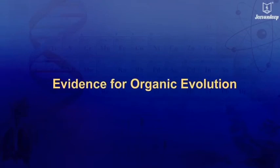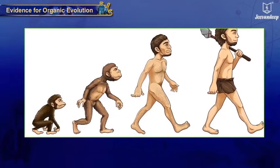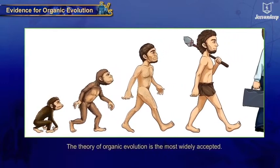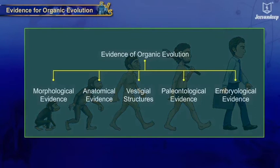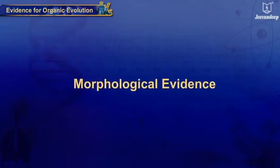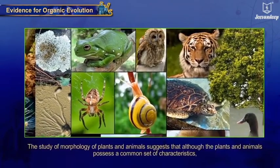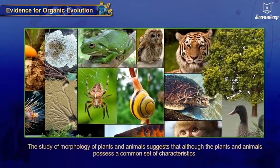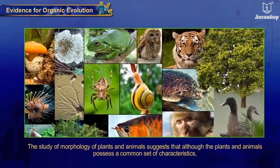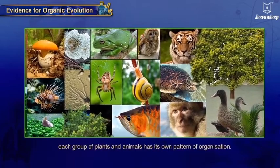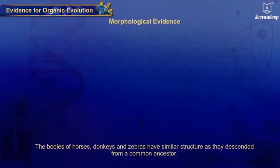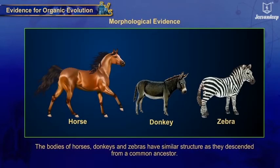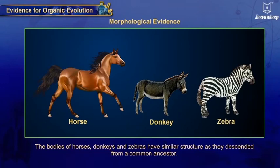Evidence for Organic Evolution: Many theories of evolution have been proposed, but the theory of organic evolution is the most widely accepted. Various types of evidence are available to support the theory. Morphological Evidence: The study of morphology of plants and animals suggests that although they possess a common set of characteristics, each group has its own pattern of organization. The bodies of horses, donkeys and zebras have similar structure as they descended from a common ancestor.